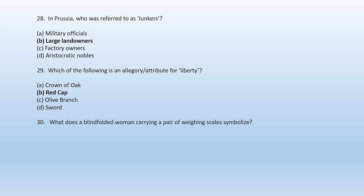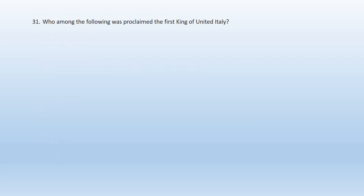Question 30: What does a blindfolded woman carrying a pair of weighing scales symbolize? A. Peace, B. Equality, C. Justice, D. Liberty. Option C — Justice is the right answer. A blindfolded woman carrying a pair of weighing scales symbolizes justice. Question 31: Who among the following was proclaimed the first king of United Italy? A. Nicholas II, B. King George II, C. Wilhelm IV, D. Victor Emmanuel II. D — Victor Emmanuel II is the right answer. Victor Emmanuel II was proclaimed the first king of United Italy.